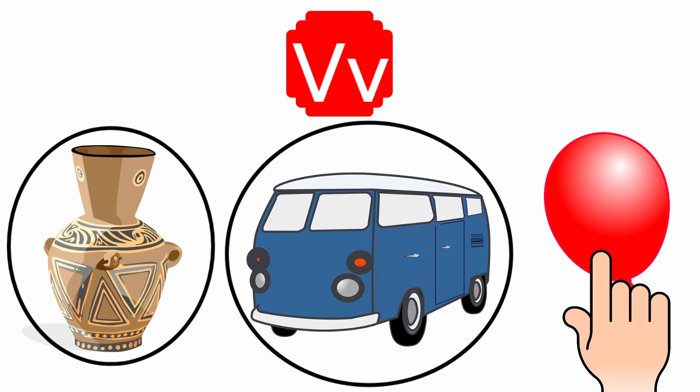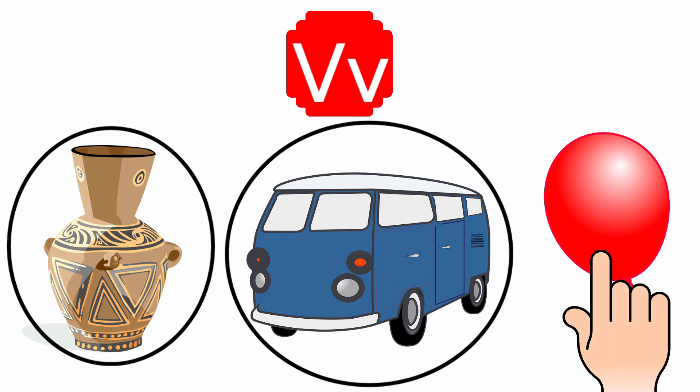Next one, Balloon. The beginning sound of the picture Balloon is B, and the sound of the letter V is V. The sound of the letter V and the beginning sound of the picture Balloon are different. So, we should not circle the picture Balloon.